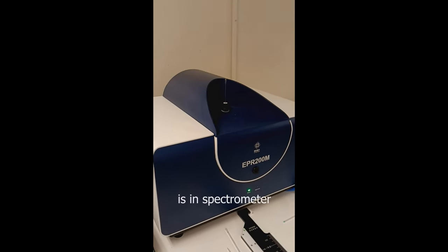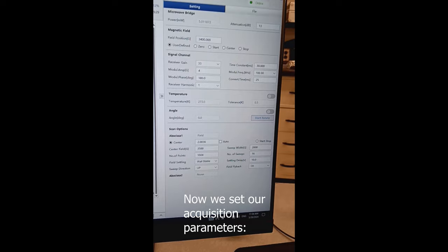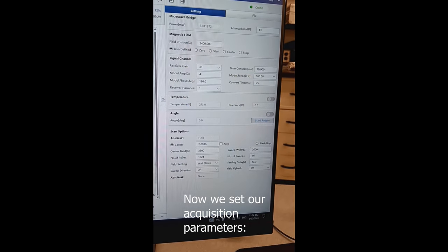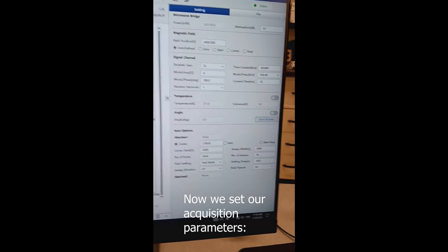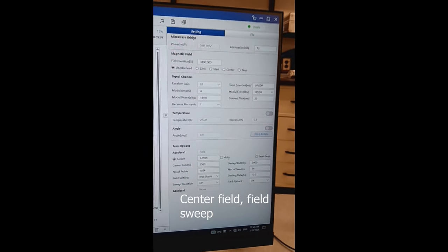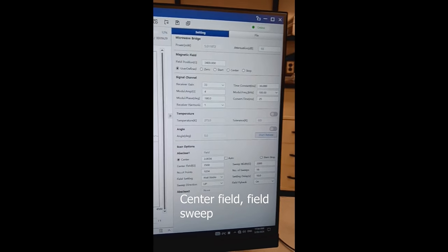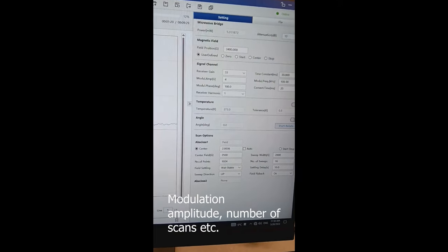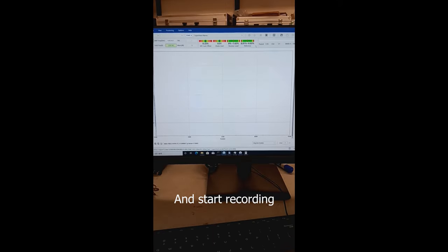Now our tri-radical sample is in the spectrometer. Now we set our acquisition parameters: center field, field sweep, modulation amplitude, number of scans, etc. And start recording.